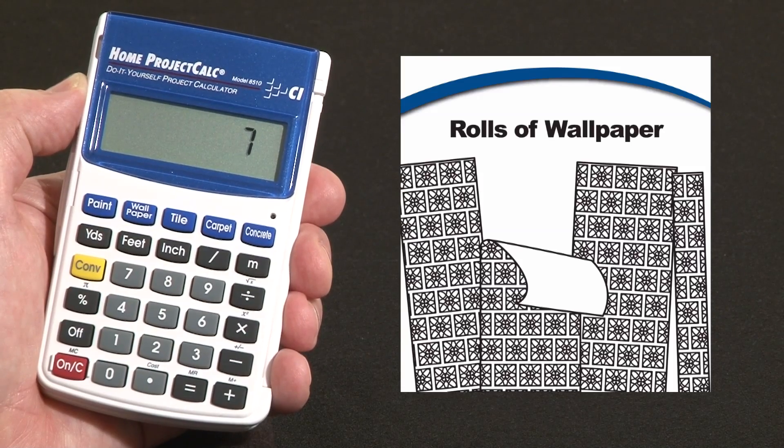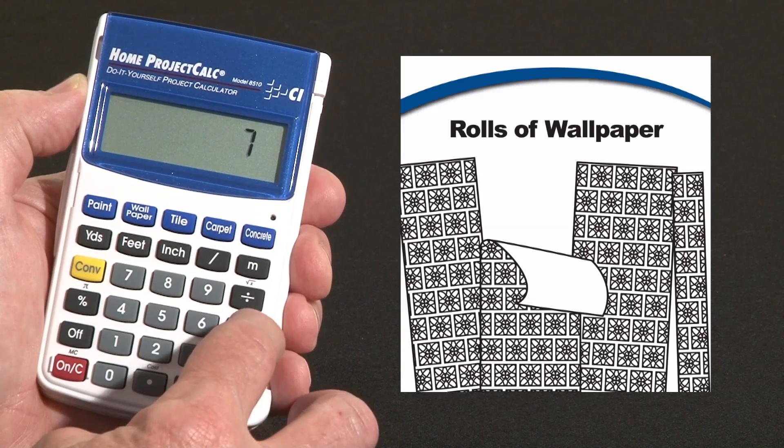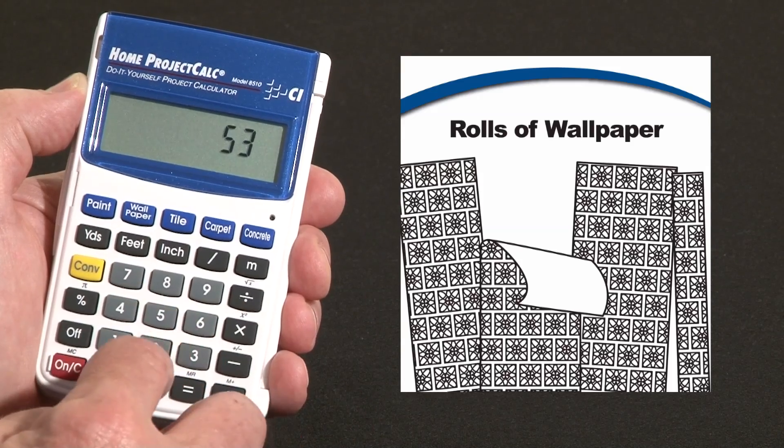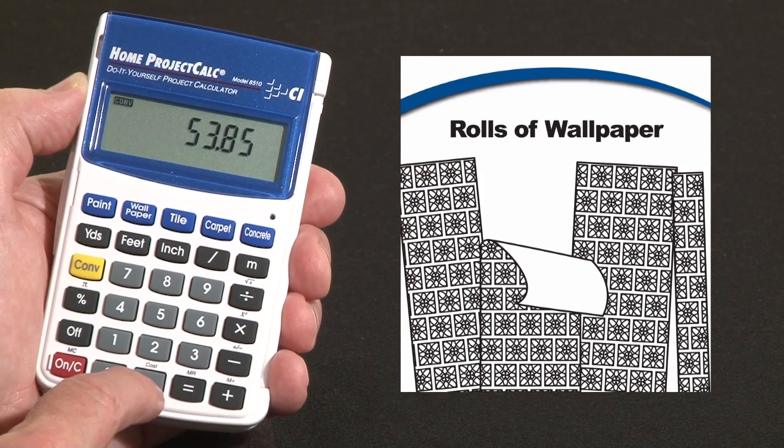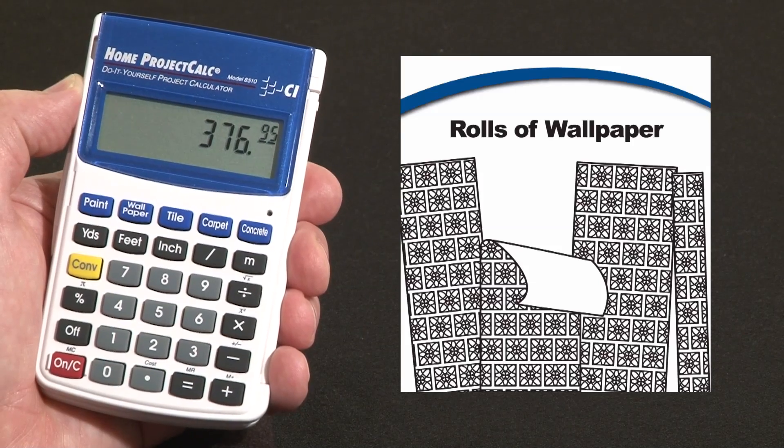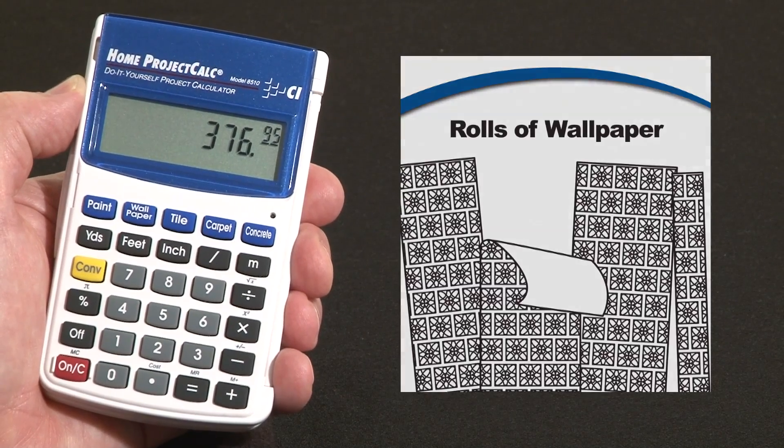And we know the cost on this particular wallpaper is $53.85 a roll, times 53.85. Convert, and over the decimal point is the cost function. Press that and it tells us we need about $377 worth of wallpaper.